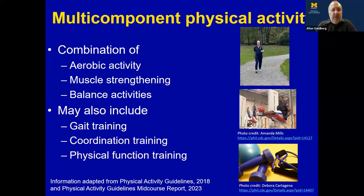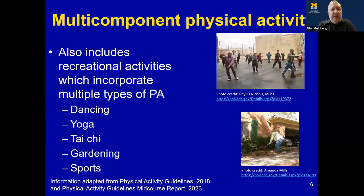Very important is combining balance activities in order to reduce falls and risk for fall-related injuries. Multi-component physical activity also includes gait training, coordination training, and training in physical function activities. It also includes recreational activities incorporating multiple types of physical activity — dancing and yoga are included. Dancing has an aerobic capacity and may help improve balance, tapping into at least two of the big three of multi-component physical activity.